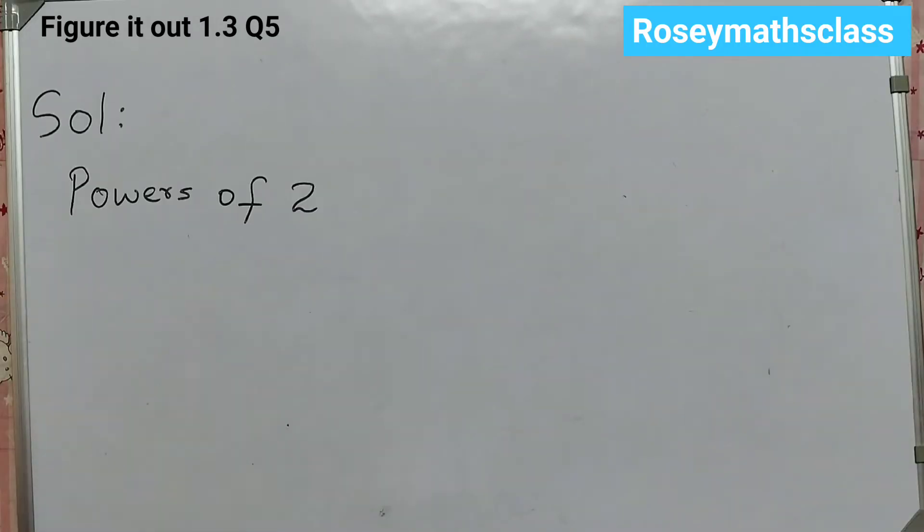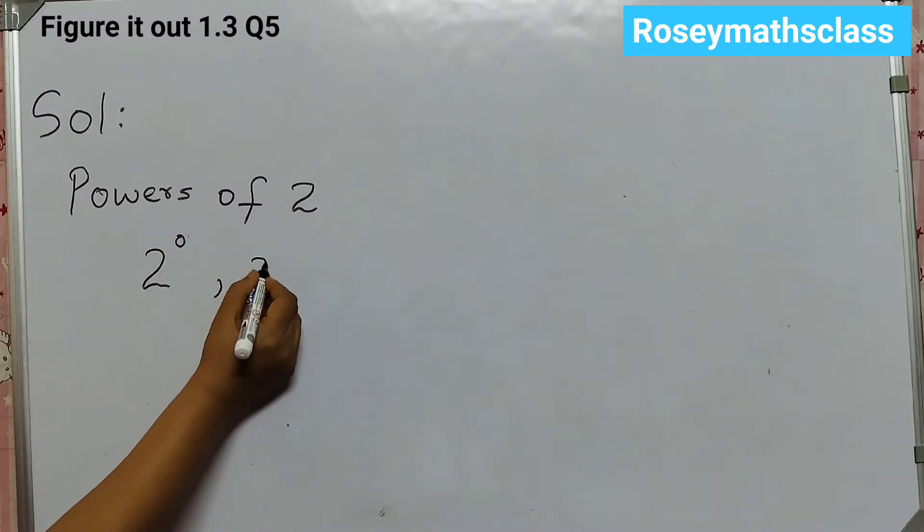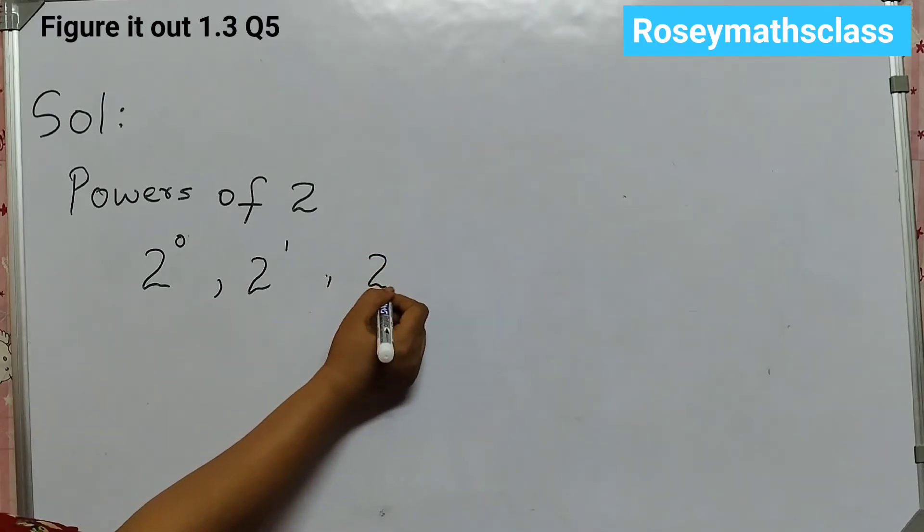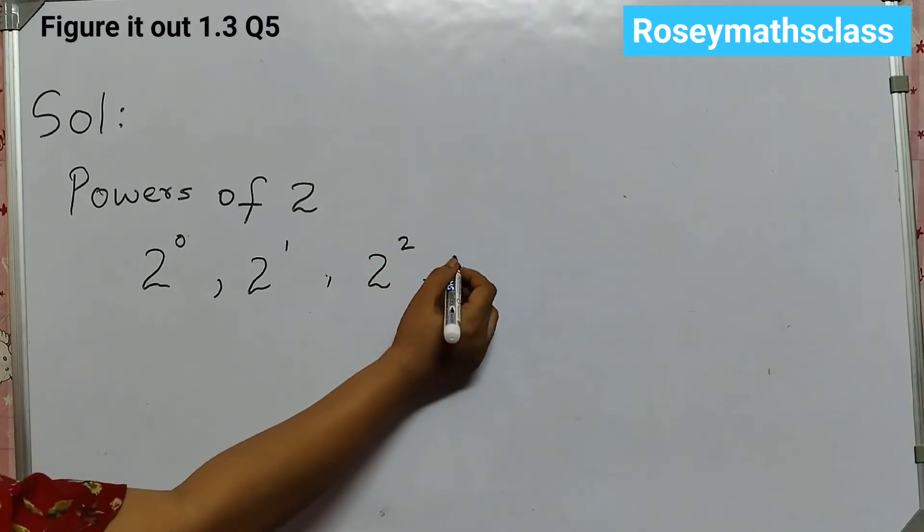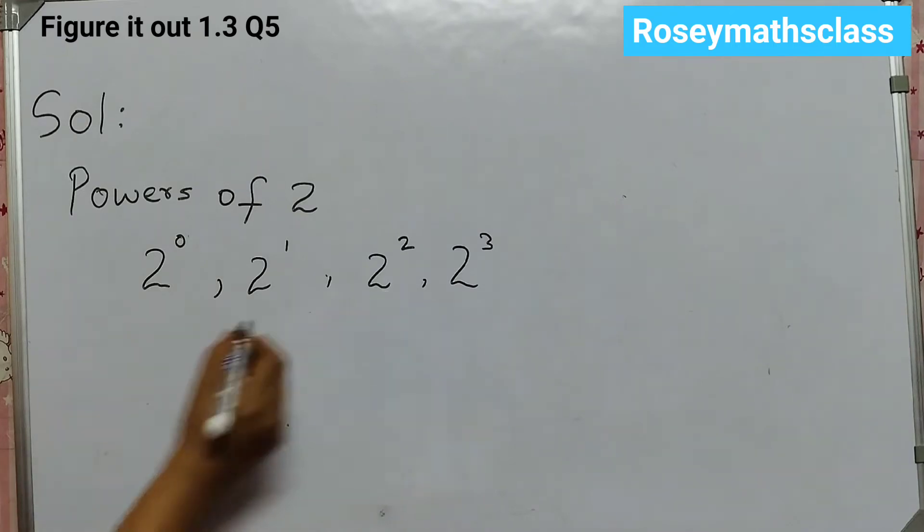So let's see how to solve this. What are powers of 2? Powers of 2 means 2 is at the base and there is a power of 0, 2 to the power of 1, 2 to the power of 2, 2 to the power of 3. So these are all powers of 2.